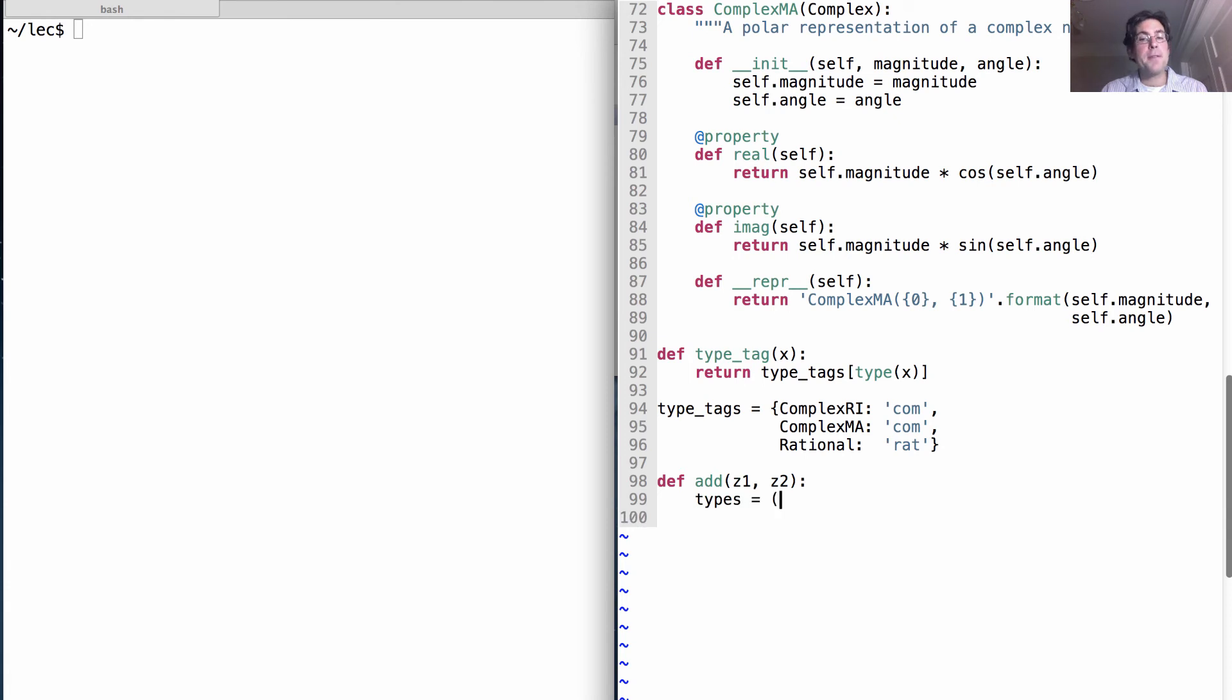We have to get the types of those numbers, which involves calling type_tag on z1 and z2.